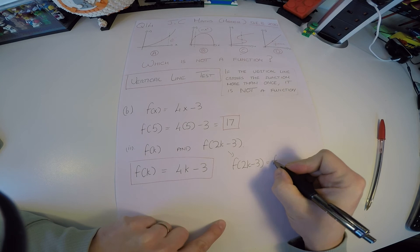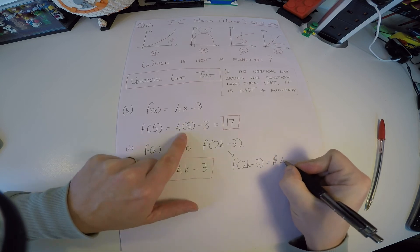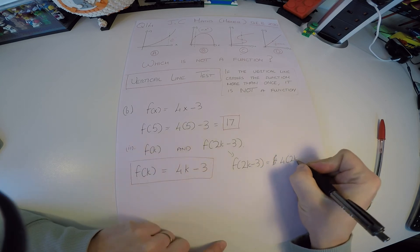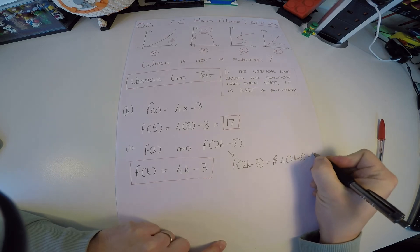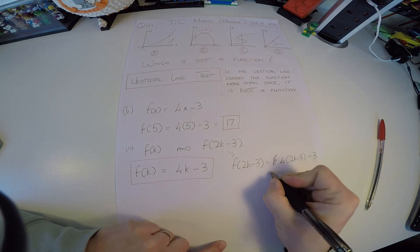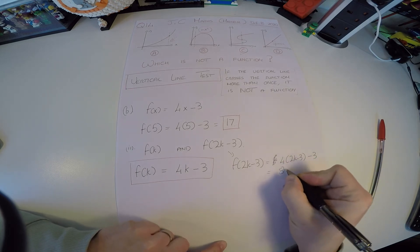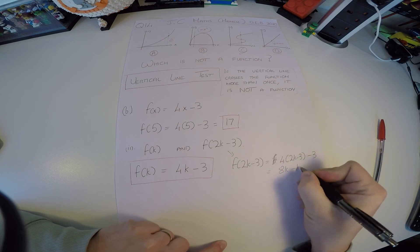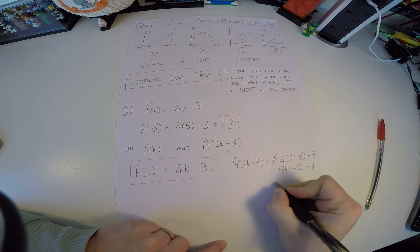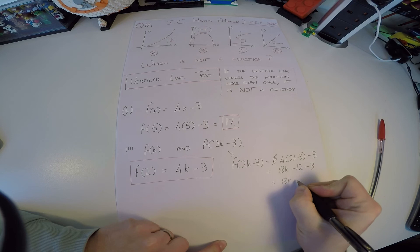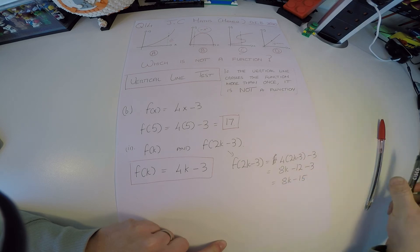That's going to replace an x again by k. So that's 4 times, and of course now 2k minus 3 goes in instead of x. Minus 3 again. Now 4 times 2k, that's 8k. 4 times minus 3, that's minus 12, and a minus 3 outside. So we get 8k minus 15 for that one.